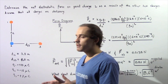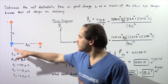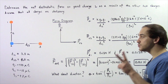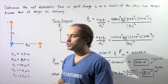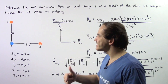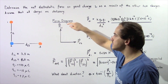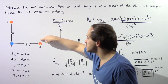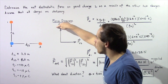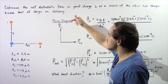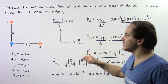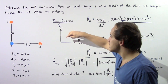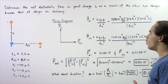Let's begin by drawing the free body diagram for point charge number two. We have two forces acting on point charge number two: the force that is a result of point charge one, and the force as a result of point charge three. Notice that these two forces are perpendicular to one another.